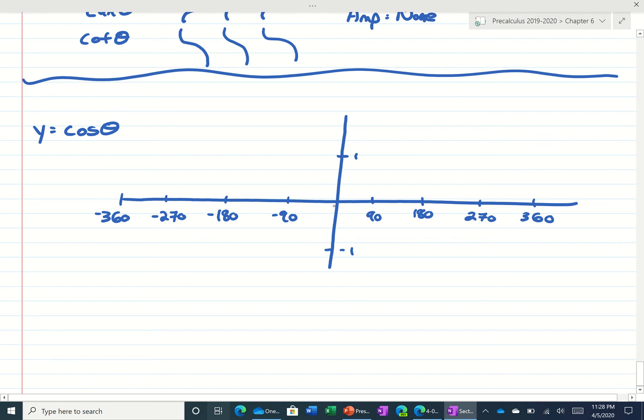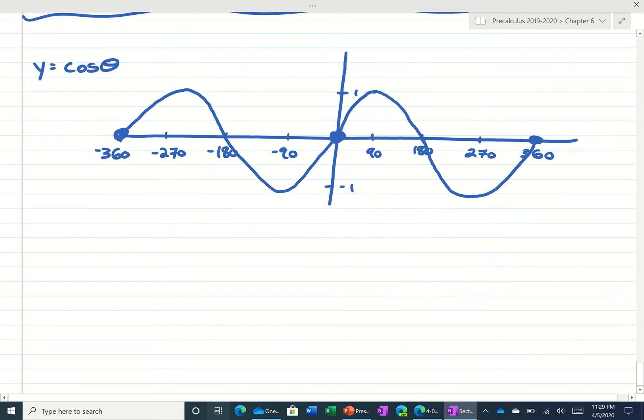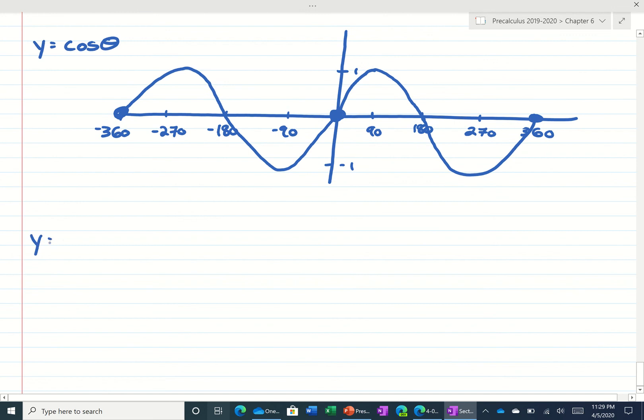Now cosine of zero is one, right? And what's the period of cosine? 360. So that means 360 degrees later it's going to start repeating, 360 degrees before it's going to start repeating. We know that cosine starts going up to one and then it's going to come back down. So that's pretty quick to get that graph. If we continue this pattern it's going to go down to negative one, zero, one, zero. So you could see I'm using the shape, the period, and I know it goes between one and negative one, and that's a quick way to graph cosine.